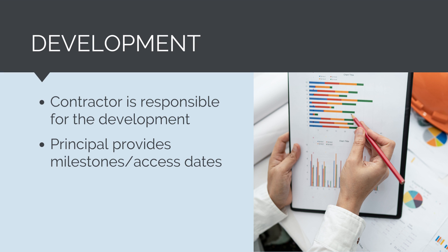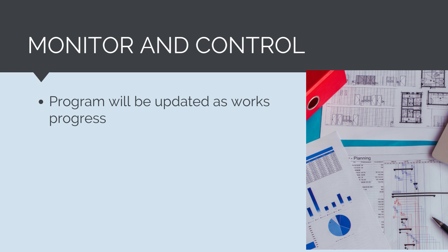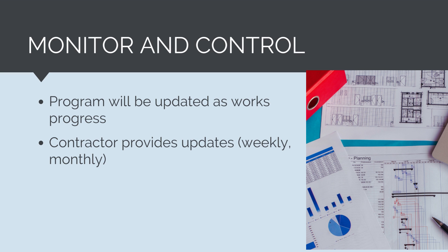Once the contractor has developed this program, the principal will review it and approve it. This needs to happen before works commence. As the works progress, the contract program will be updated. It is the responsibility of the contractor to report back on progress to the principal. The contract will nominate how regularly the principal is to provide an updated program — this may be weekly, fortnightly, or even monthly.